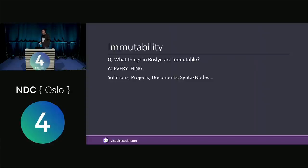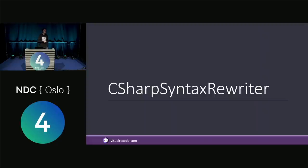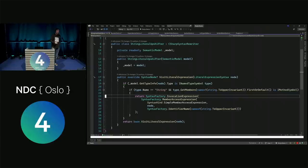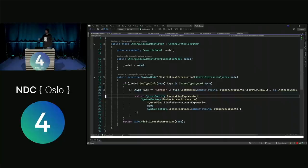When we're trying to rewrite code, we use CSharpSyntaxRewriter. This is just like CSharpSyntaxWalker, except all the methods return a syntax node. You take a syntax node in, and if you want to change it, you modify it and return your modified syntax node back out. If you don't want to change it, you return base.VisitLiteralExpression() — always best to call the base method. If you want to remove a syntax node entirely, you can return null and it will disappear forever. If you do that accidentally and ship the code, you can make people very, very unhappy.